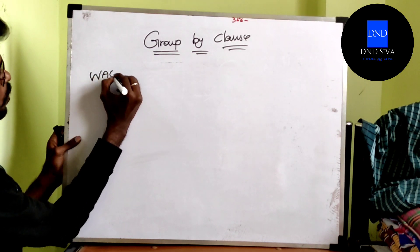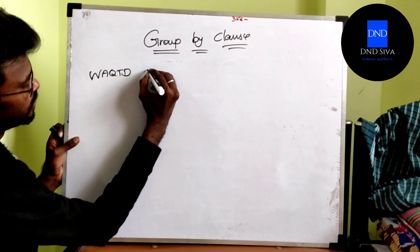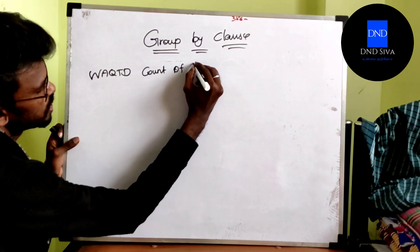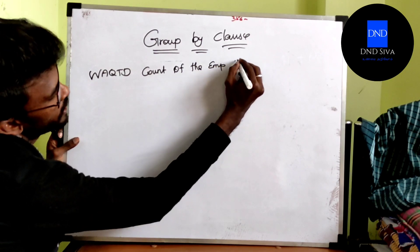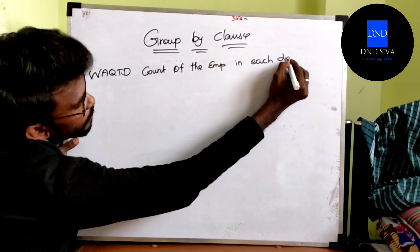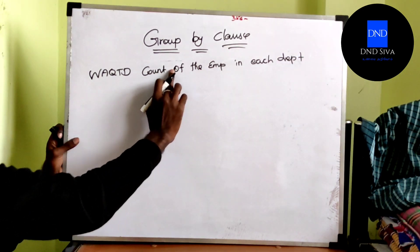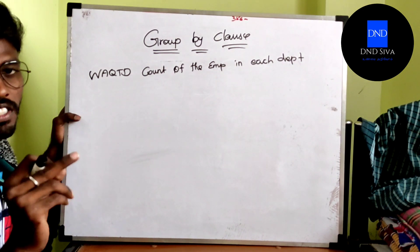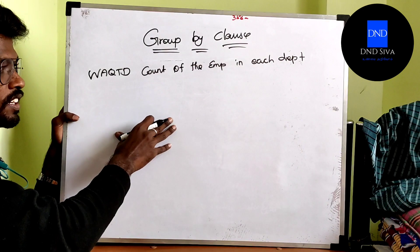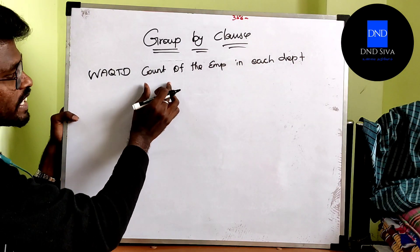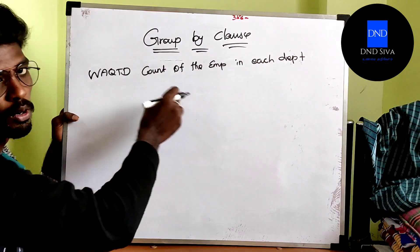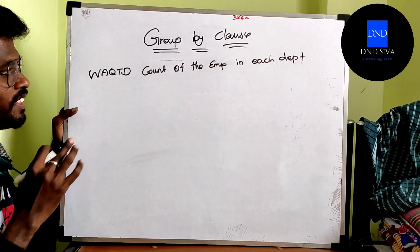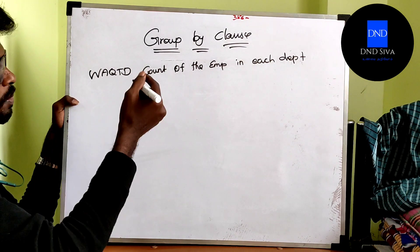Write a query to display the count of employees in each department. If you choose the count of employees in each department, we will look at specific steps. Then we will use group by class. How do you use group by class?